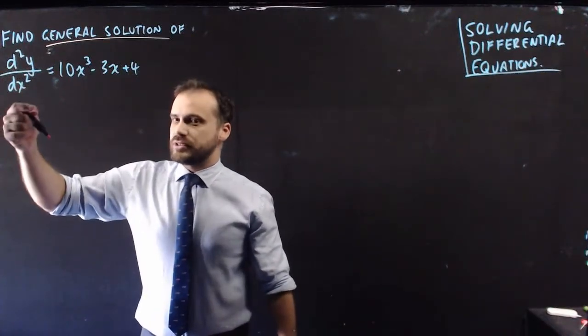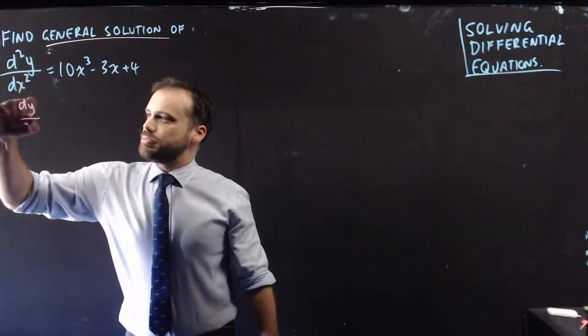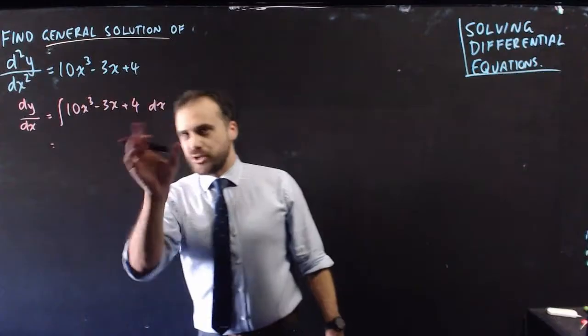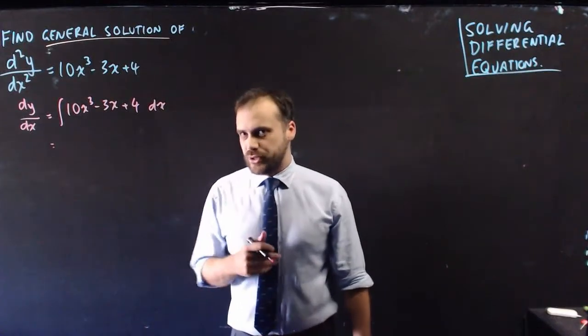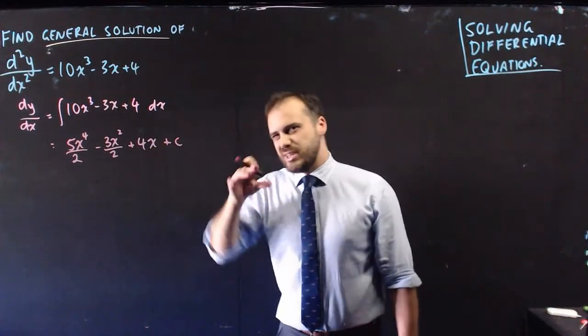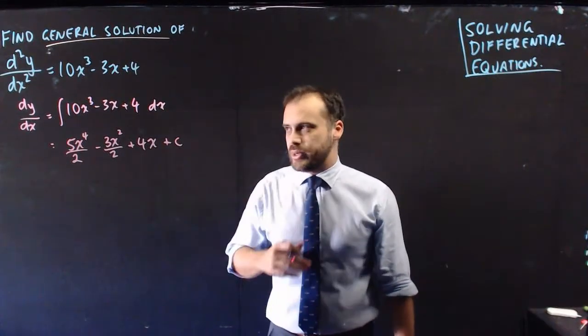First of all, if our second derivative is that, then dy/dx is going to be the integral of that. Now the integral of a polynomial is trivial, so I'm not going to bore you with how to do that. So there are our three terms, but don't forget there's this plus c on the end, and there's the little twist in the tail on these questions.